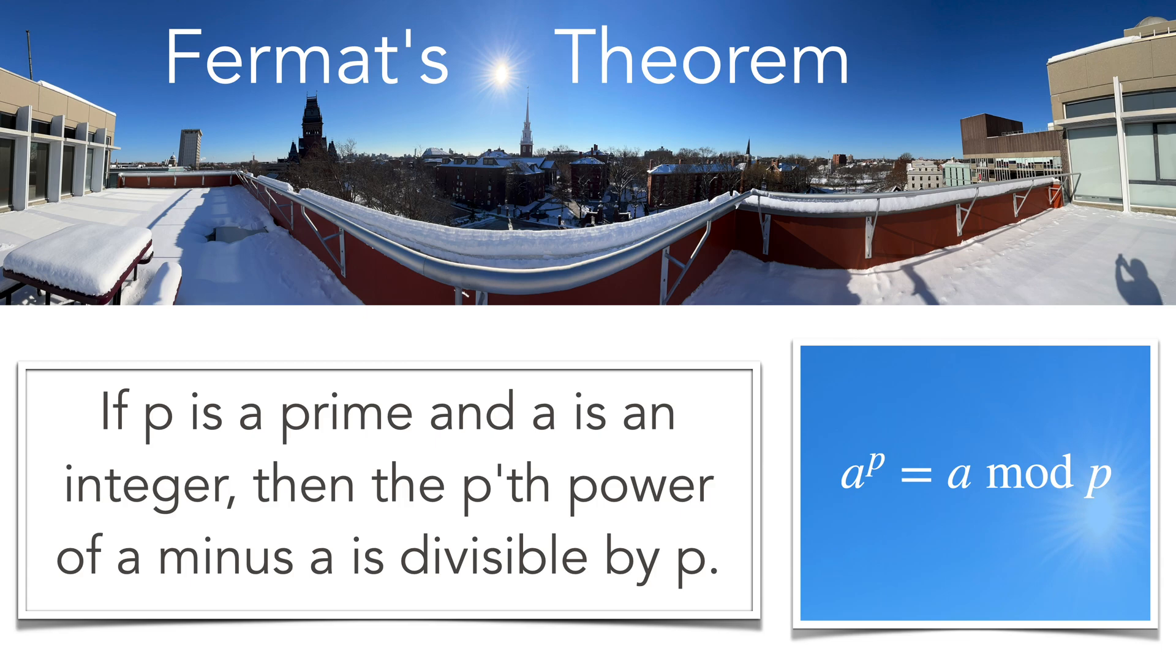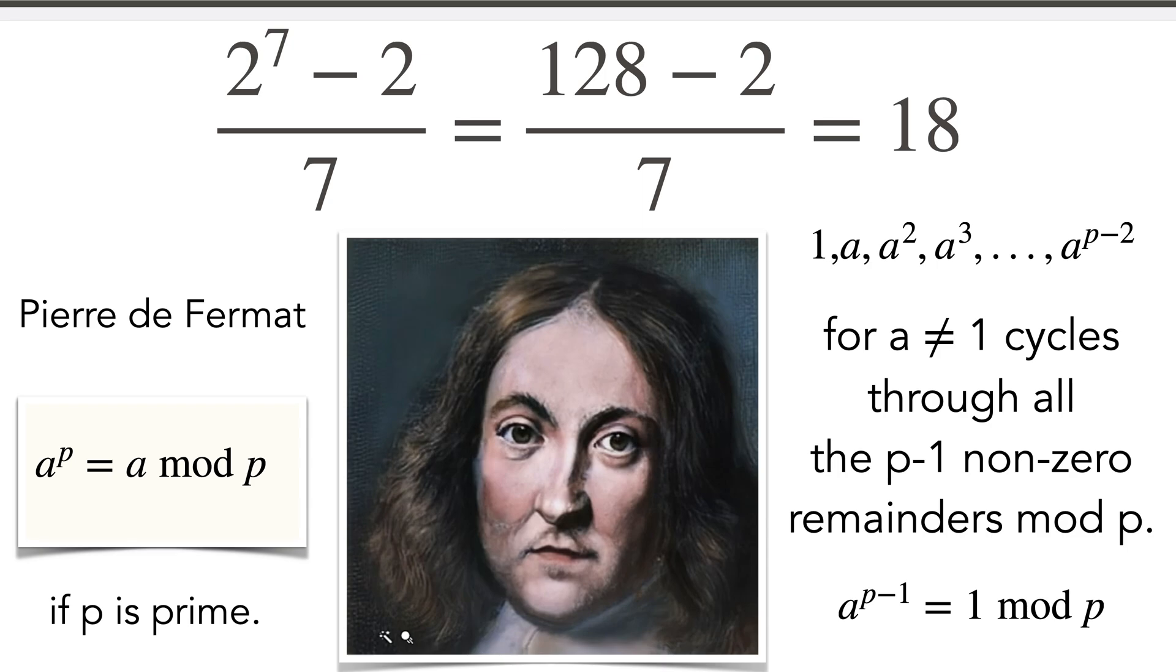The little theorem of Fermat is one of the cornerstones of modern cryptology. It tells that the pth power of an integer minus the integer itself is a multiple of p as long as p is prime. So here is an example with p equal to 7 and a equal to 2. We compute that a to the p minus a is 126 which is indeed divisible by 7.